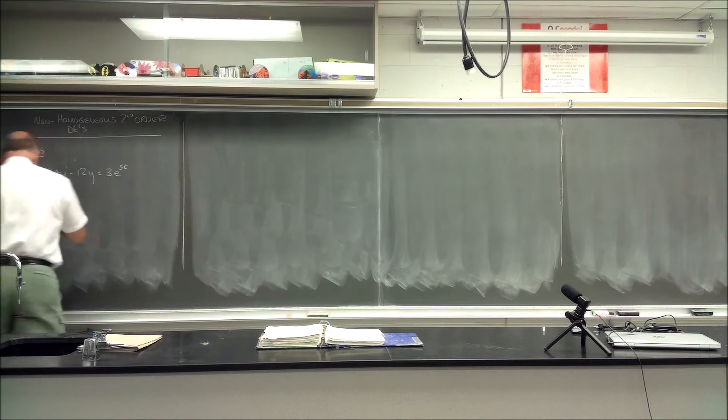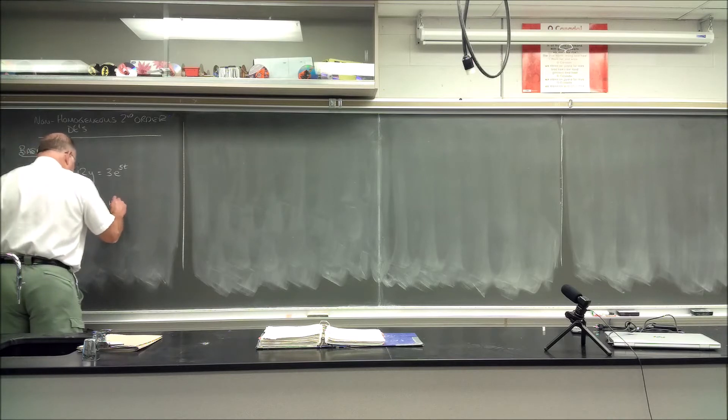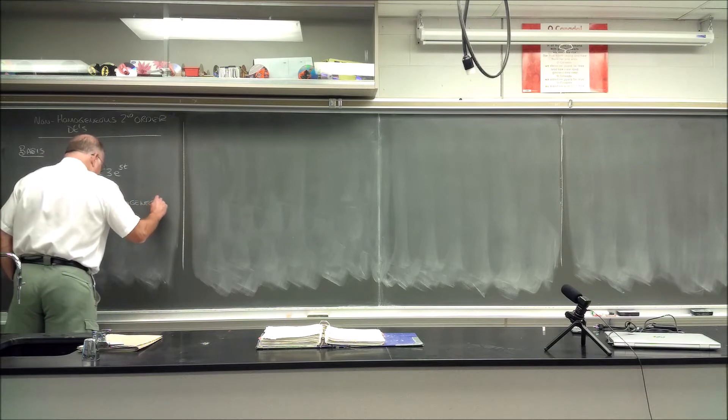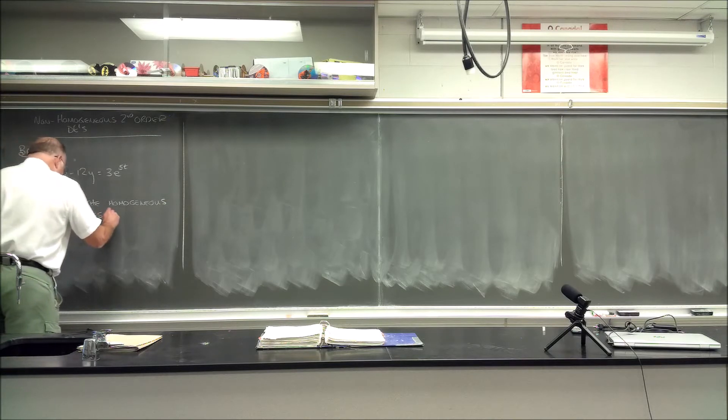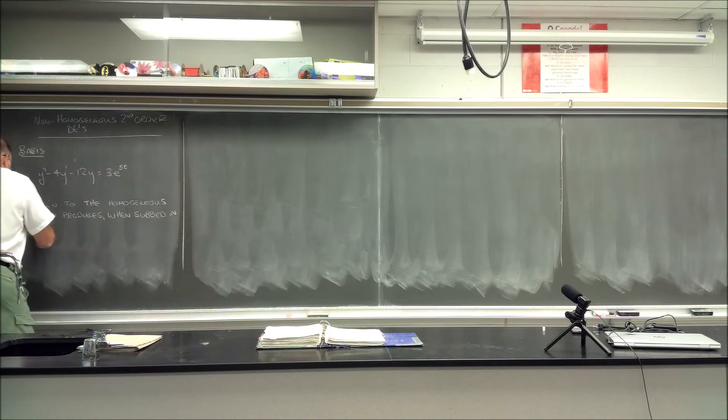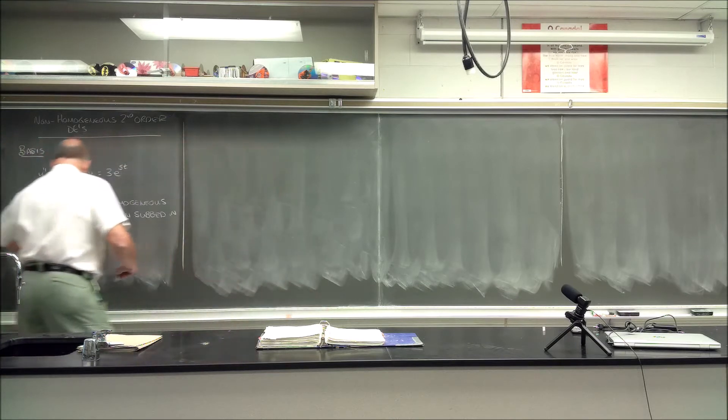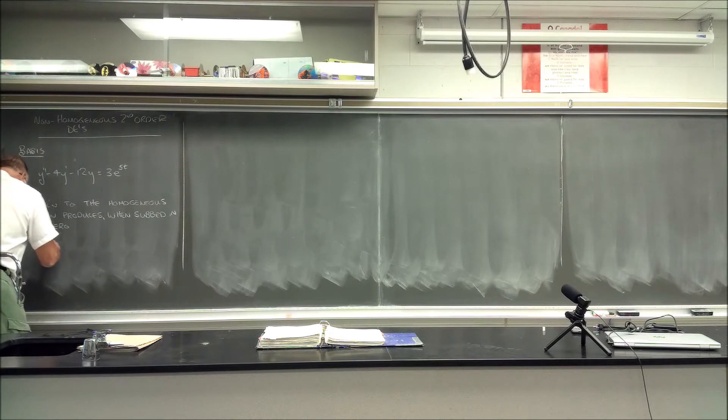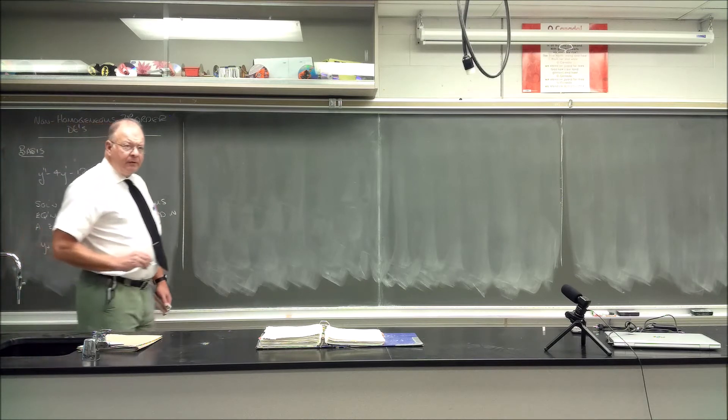The solution to the homogeneous equation produces, when substituted in the equation, a zero. So our solution, let's do it another way. We'll say that y of the homogeneous equation is equal to y_1 plus y_2. And that's perfectly acceptable.